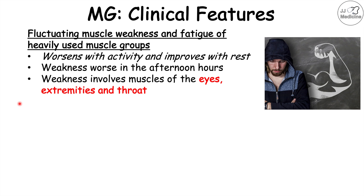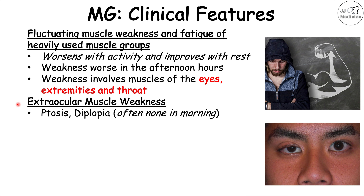The first group we're going to look at are the extraocular muscles. Extraocular muscle weakness can present as ptosis, which is drooping of the eyelid, and diplopia, which is double vision. What's important about this ptosis and diplopia is that it is often not present in the morning — a patient wakes up without ptosis or double vision, but as the day goes on into the afternoon and evening hours, they start to have ptosis and double vision.